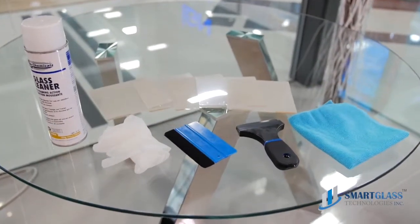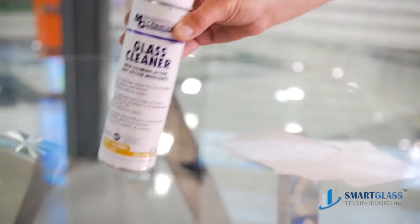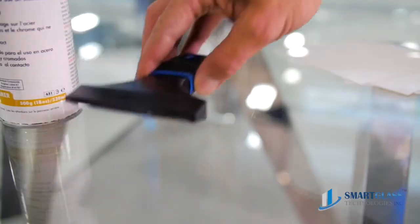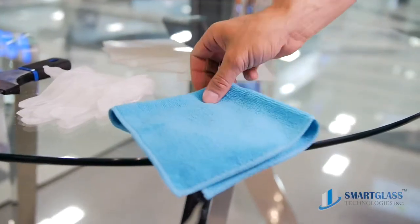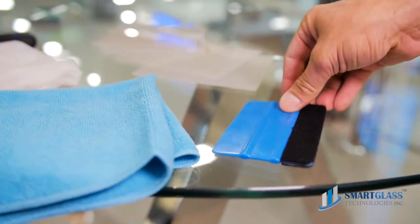To install the iSwitch film on any glass surface, you will need glass cleaner, razor, latex gloves, microfiber cloth to make sure the surface is 100% dry, and a scraper.